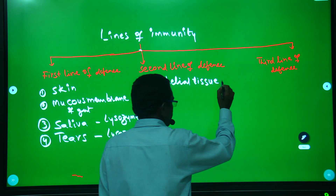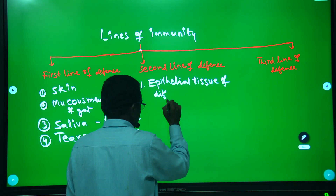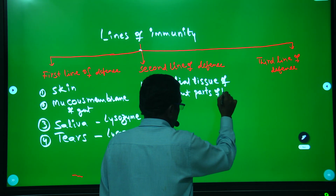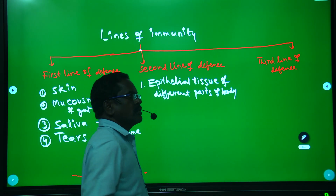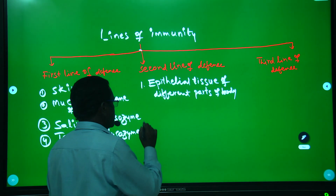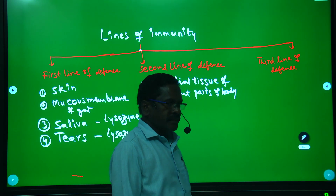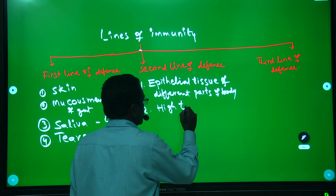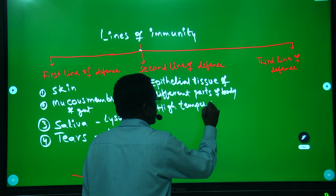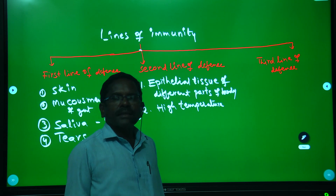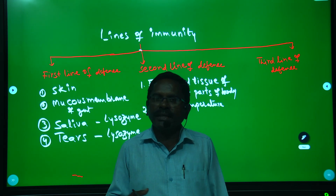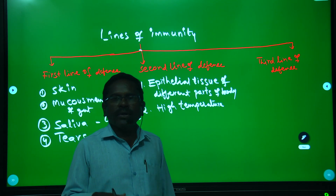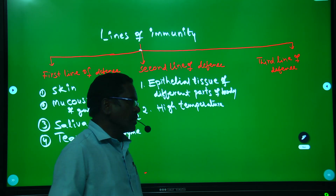The epithelial tissue of different parts of the body also kills the microbes and germs. Second is high temperature. Our body temperature is 37 degrees centigrade. Sometimes if body temperature increases, due to high temperature, the germs are killed.